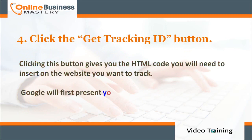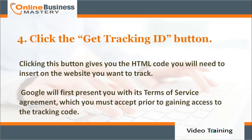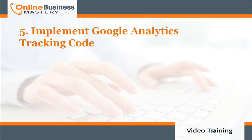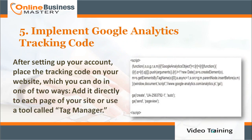Number four: click the 'Get Tracking ID' button. Clicking this button gives you the HTML code you will need to insert on the website you want to track. Google will first present you with its terms of service agreement, which you must accept prior to gaining access to the tracking code. Number five: implement the Google Analytics tracking code. After setting up your account, place the tracking code on your website.